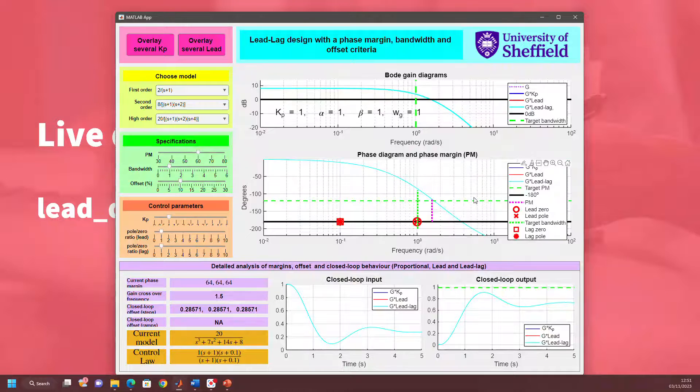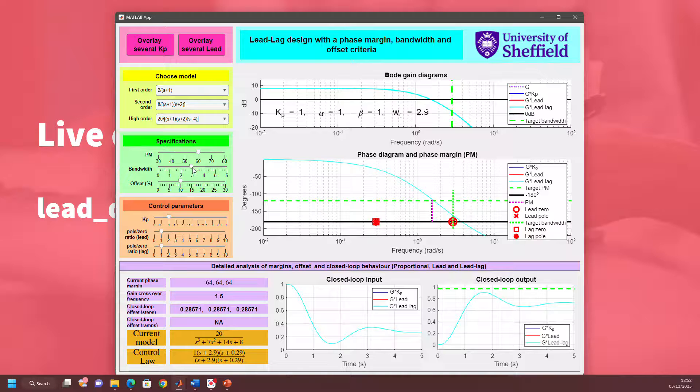When we do a lead design, we're trying to increase the bandwidth. At the moment, you can see where the phase margin is. I've got a bandwidth of about one and a half to two, just with this simple proportional design. So I can get a higher bandwidth with my lead compensator. Let's try something like three.